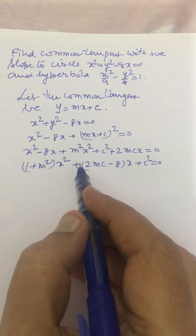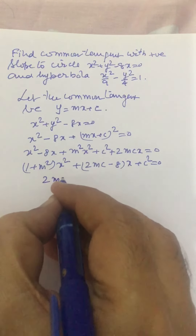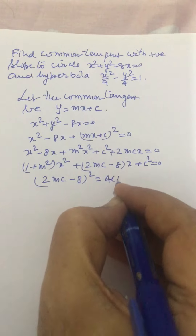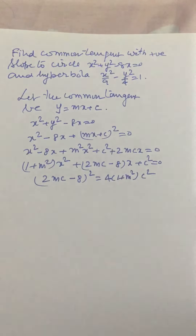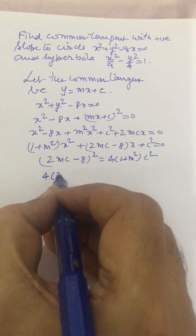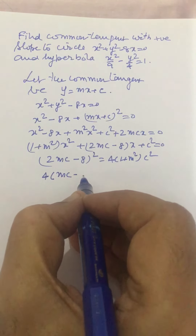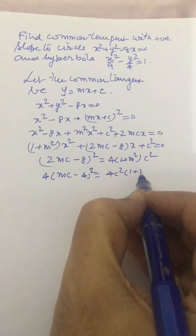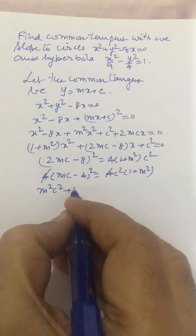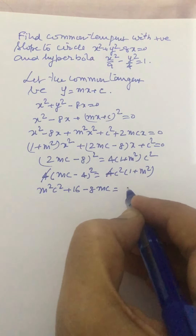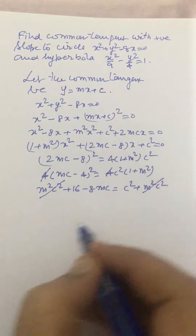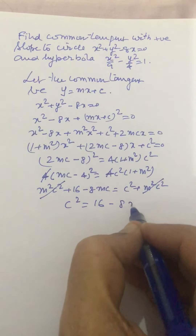Since there will be only one root of this equation, the discriminant equals zero. So (2mc - 8)² = 4(1 + m²)c². Expanding and simplifying, m²c² + 16 - 8mc = c² + m²c², and the m²c² terms cancel, leaving c² = 16 - 8mc. Let this be Equation 1.